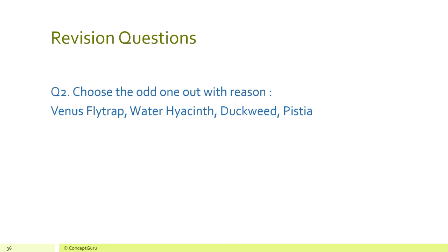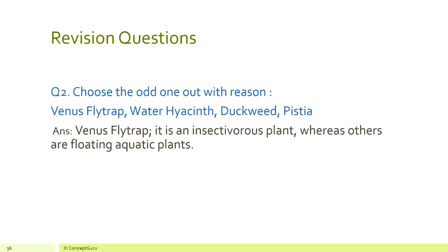Choose the odd one out with reason: venus flytrap, water hyacinth, duckweed, and Pistia. The odd one is venus flytrap — it is an insectivorous plant, whereas the others are floating aquatic plants.